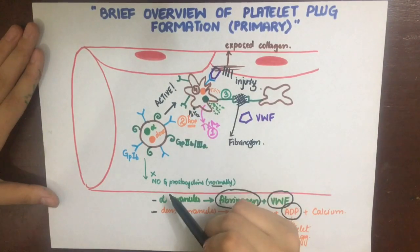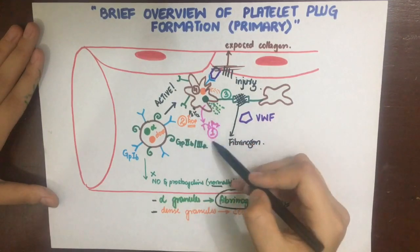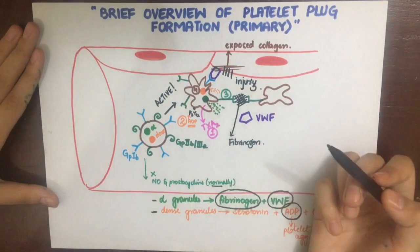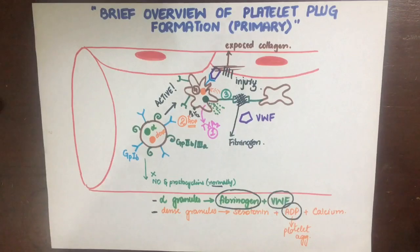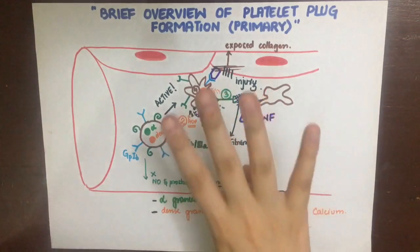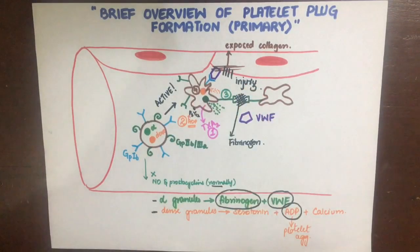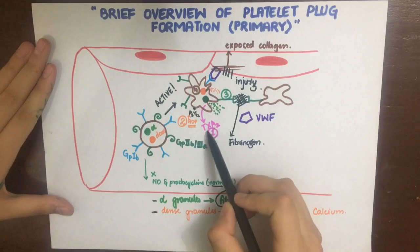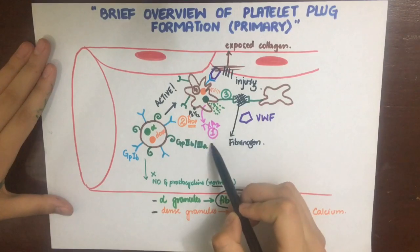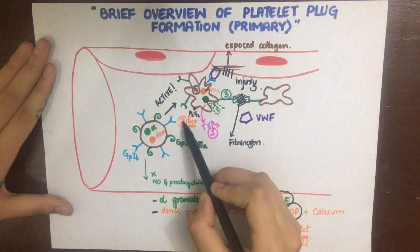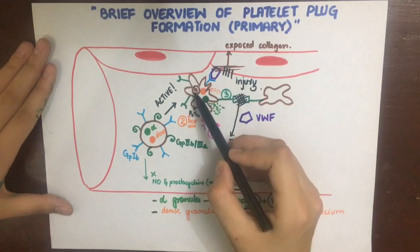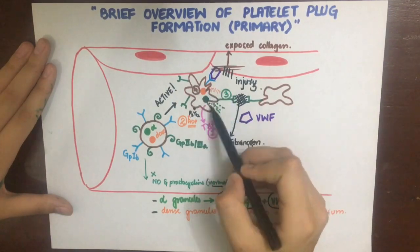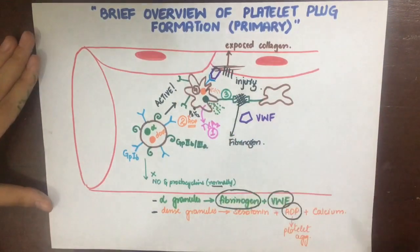ADP is also secreted from the dense granules, acting on P2Y12 receptors to help in platelet aggregation. Thromboxane A2 is also secreted, which helps in platelet aggregation. These are the sites of drug action, marked as 1, 2, 3, and 4, which can be blocked to achieve antiplatelet action.